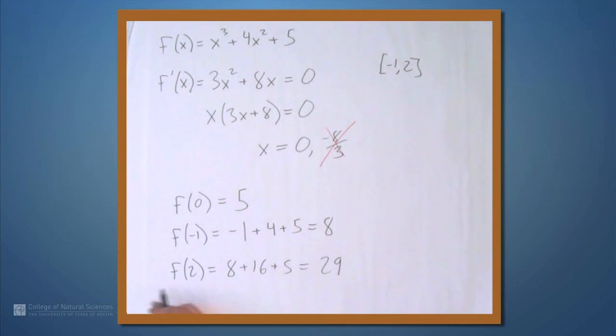So, we find that of these three values, 5 is the smallest, 29 is the largest, so 5 is our min, and 29 is our max. And that's how you find the maximum and minimum values of a function on a closed interval.